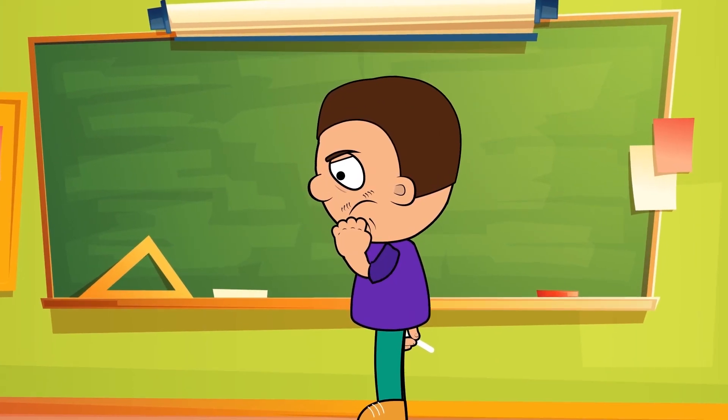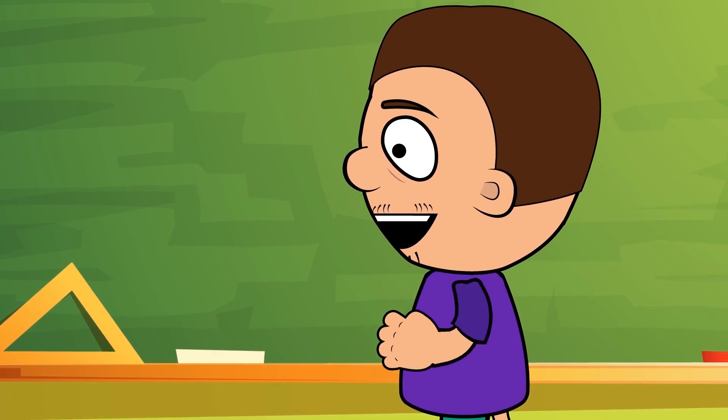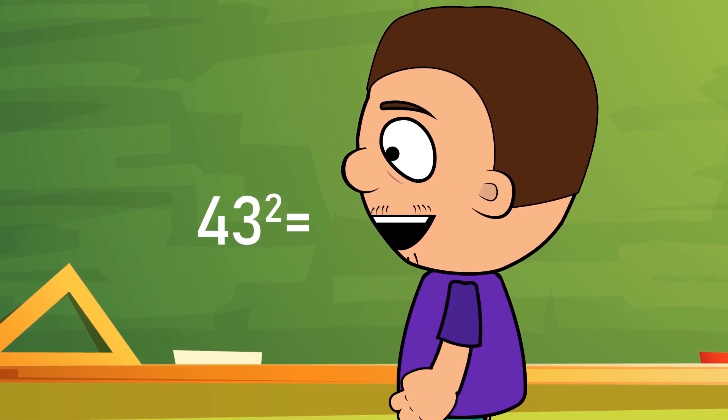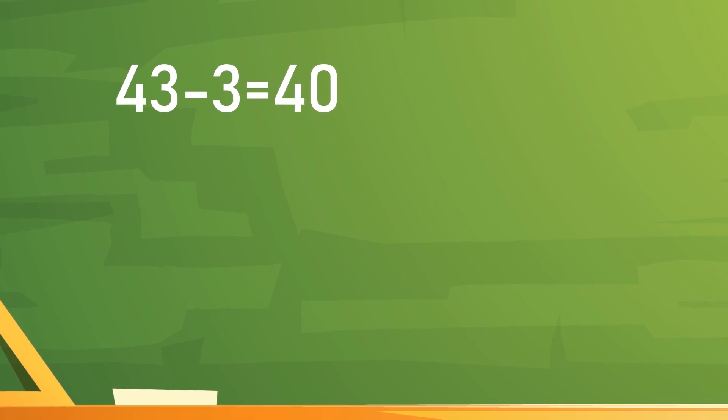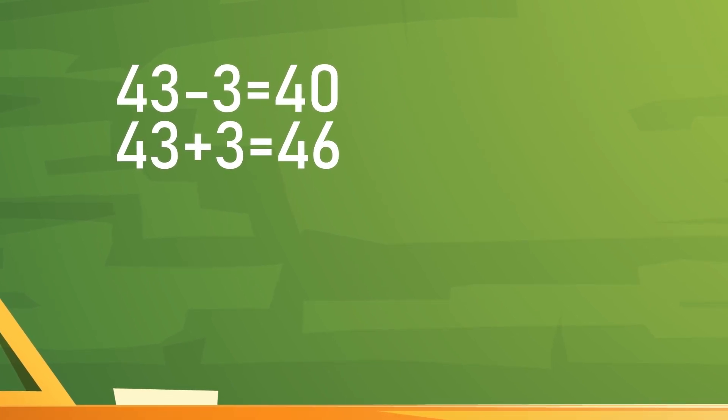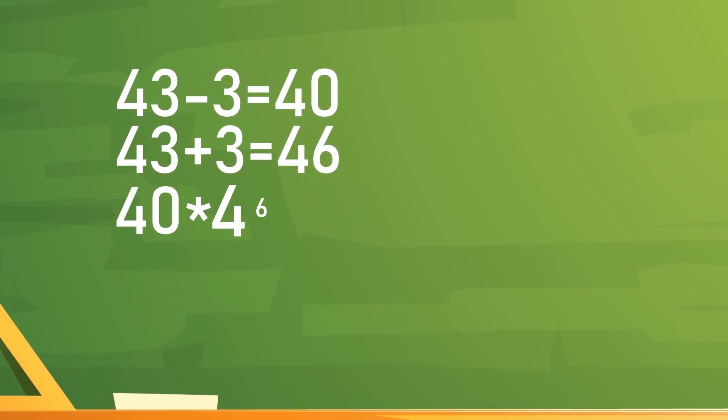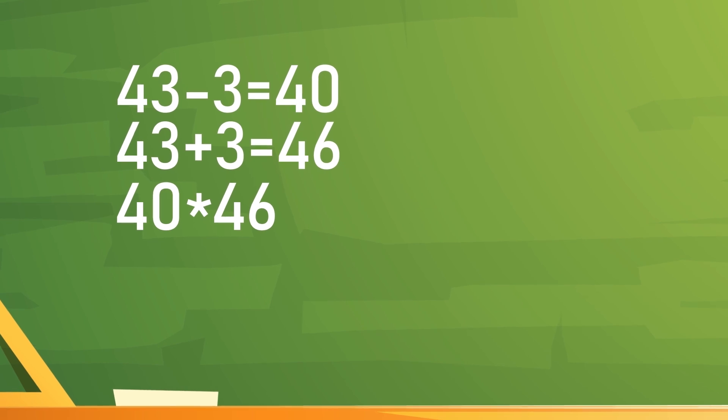Now for something even harder. How to find the square of any two-digit number. For example, 43. We subtract 3 to get a nice round number. In this case, 40. Then we add 3 to our original number, getting 46. Now we multiply 40 by 46. This is a lot easier.